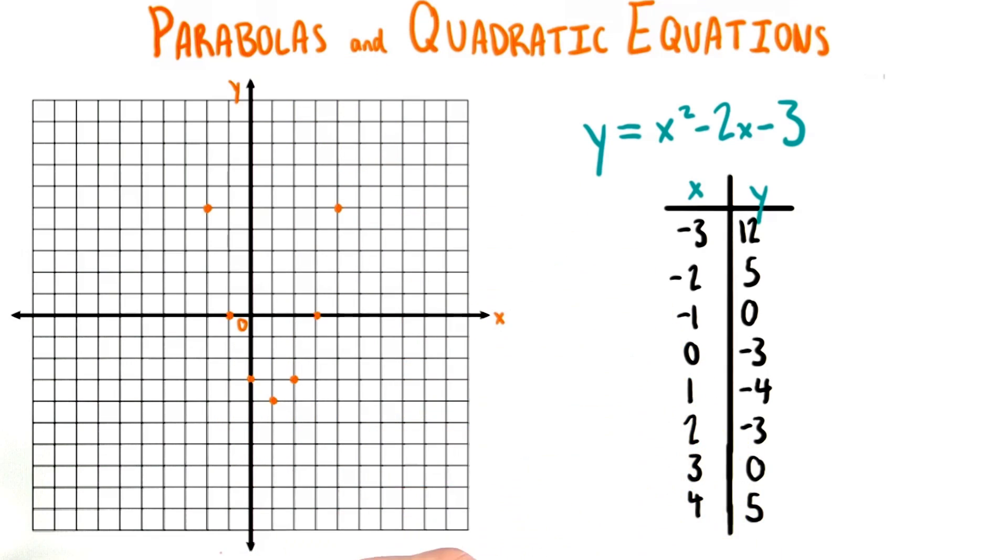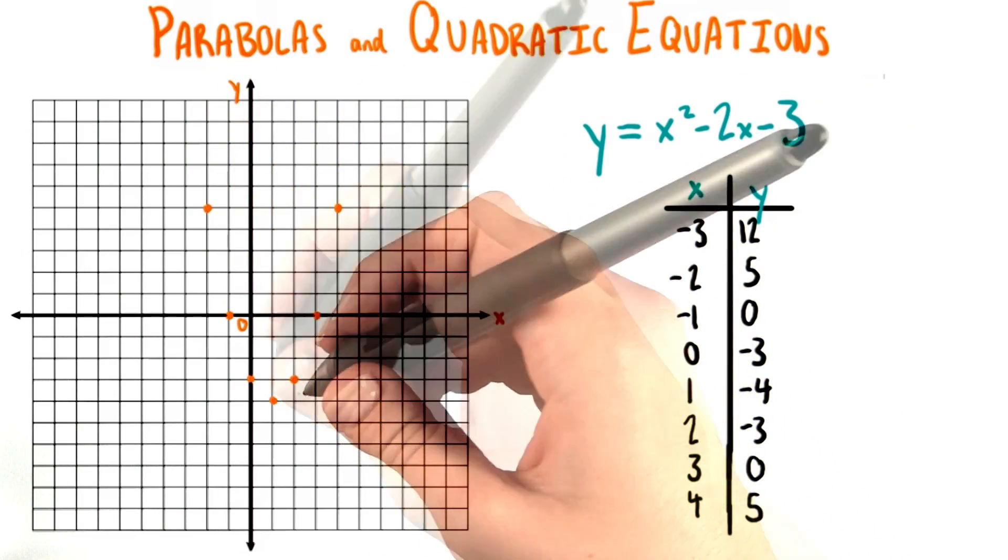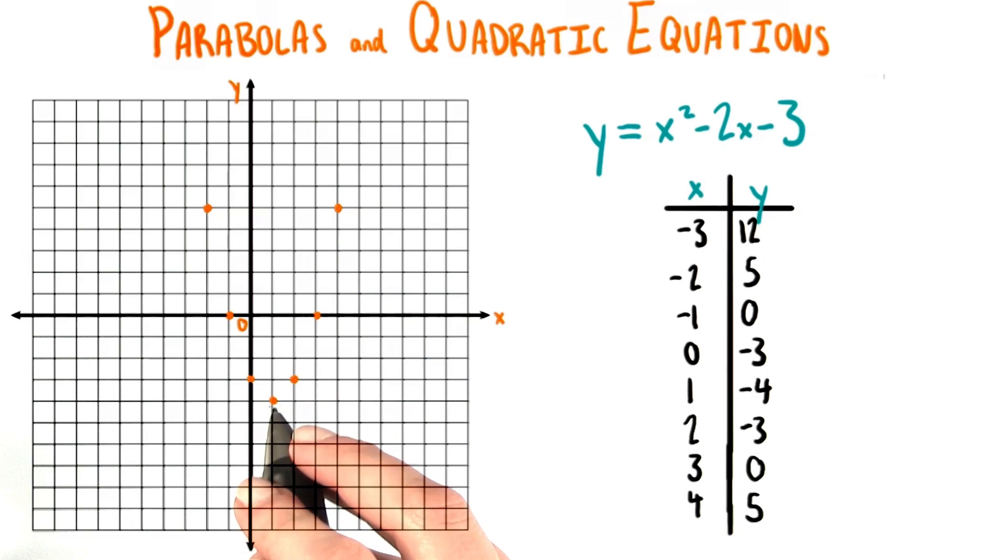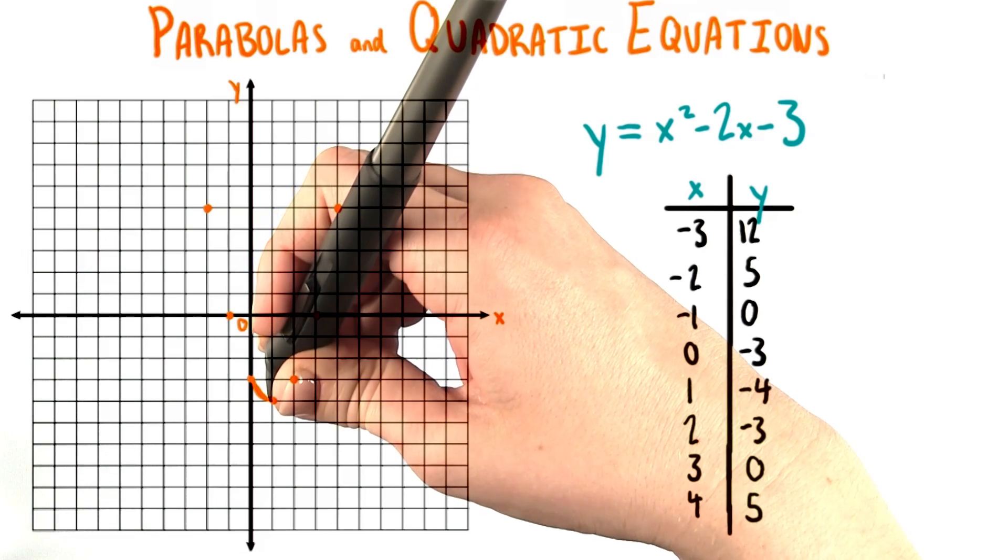Now that I have all of these points marked, I can start sketching a line that looks like it'll connect all of them. I like to start at the vertex, at this lowest point in this case, and then move in a curved way up to the next point to the left.